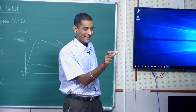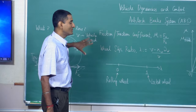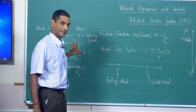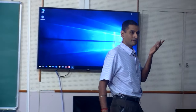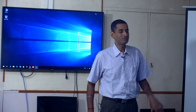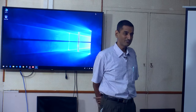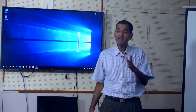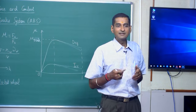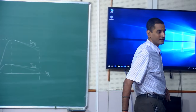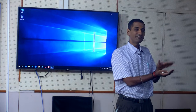ABS essentially acts along with the existing brake system to prevent this wheel lock phenomenon. Wheel lock is not desirable, and one learns more deeply about why when going in depth into vehicle dynamics. Let me explain with a very simple analogy why wheel lock is not desirable. Let us say I am walking on a dry floor — I place my feet, apply load due to my body weight, and there is a normal reaction at the interface.